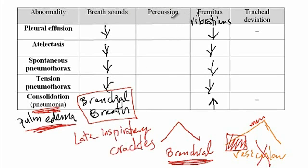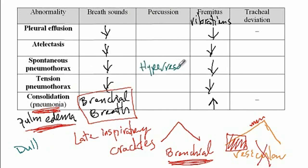In terms of percussion, when percussing on something hard like a stone you hear a dull sound, while hitting a drum produces a hyper-resonant sound. With pneumothorax, since there is air inside the pleural cavity, there is a hyper-resonant sound on percussion. With atelectasis, since the lung has collapsed, it would be dull. With pleural effusions as well as consolidations, since there is fluid being percussed over, the sound would again be dull.